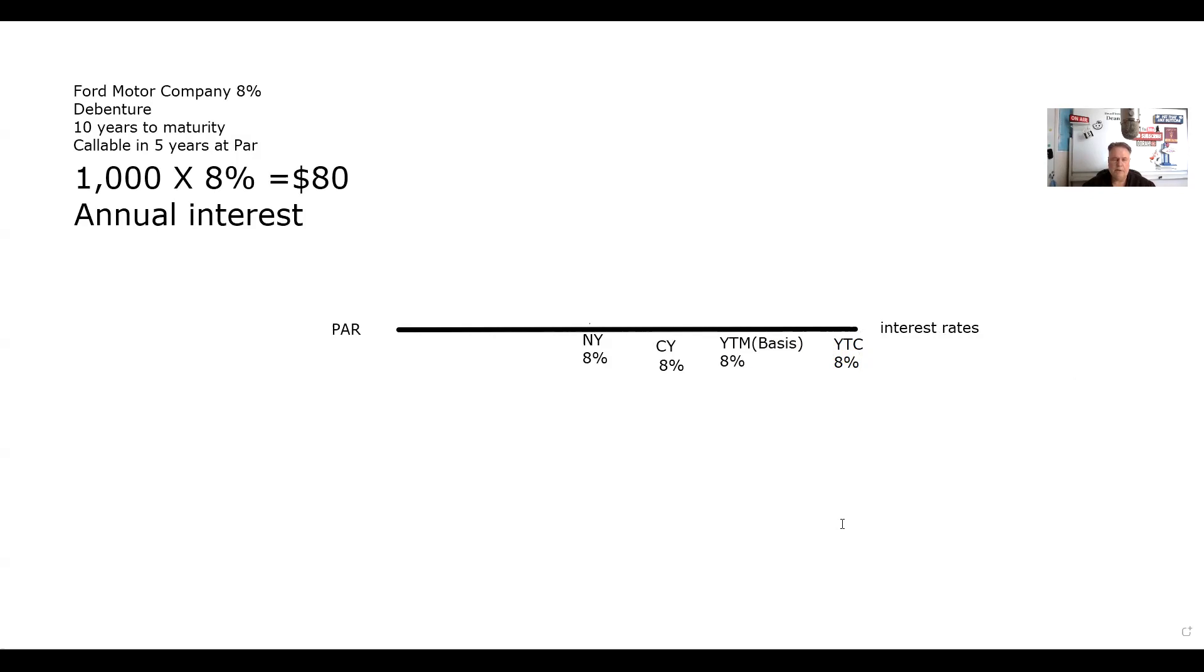So current yield is the same. And most people who buy bonds hold them to maturity. The fancy word for yield to maturity is basis. And if I buy this bond at par and I hold it to maturity, and Ford gives me back par, I didn't make or lose any money by holding the bond to maturity. The bond is callable in five years at par. So if they call it in five years, I didn't make or lose any money by holding it to the call. All I made was my 8%.